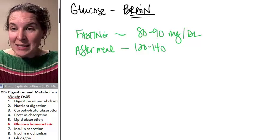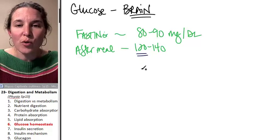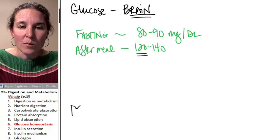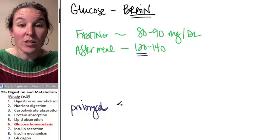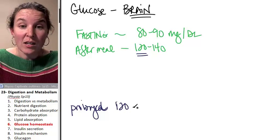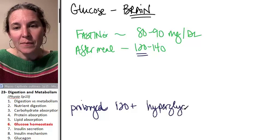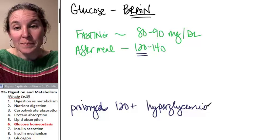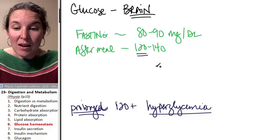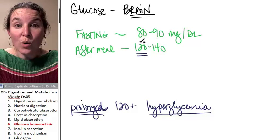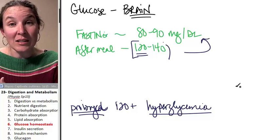Now, if you maintain above this number chronically, so if you have prolonged glucose concentrations above 120, that's called hyperglycemia, and that's a problem. Now this is prolonged, because within two hours your glucose concentrations should return to fasting even though they get high immediately after a meal.